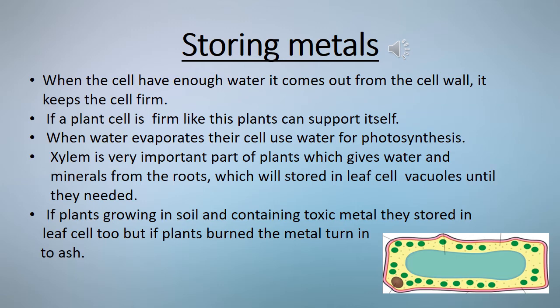Water evaporates from leaves and their cells use water for photosynthesis. Xylem vessels bring fresh water and minerals up from the roots. The minerals are stored in leaf cell vacuoles until they are needed. If the plant is growing on soil containing toxic metals, these metals accumulate in the vacuoles of leaf cells too.